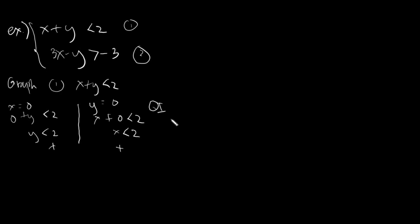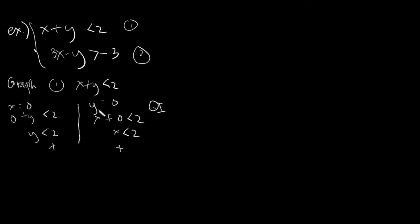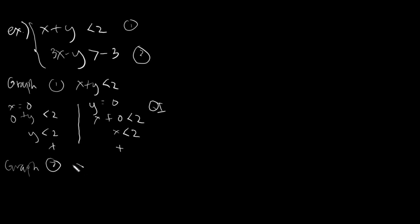We are doing this because we want to have an idea of what major parts of our quadrant we will use. If all our points lie on the first quadrant, our graph will look like this — majority on quadrant one, with very little on quadrant two, and the rest. So going back, let's now graph equation 2: 3x minus y is greater than negative 3.